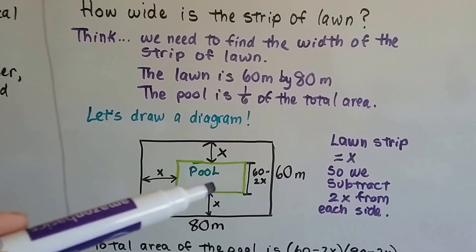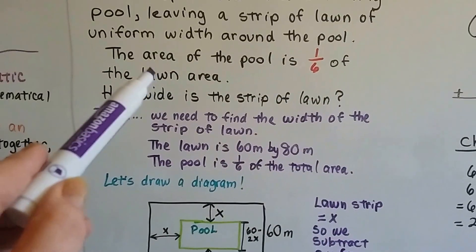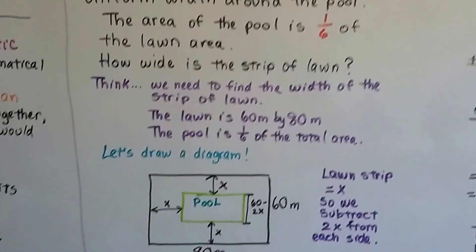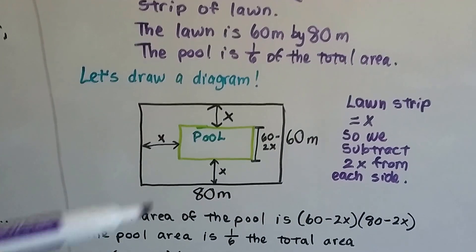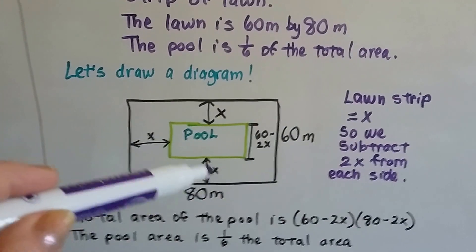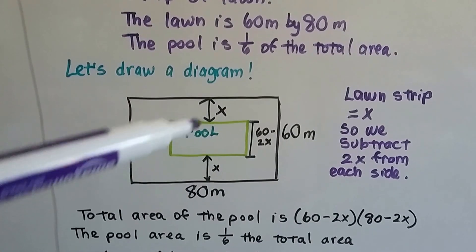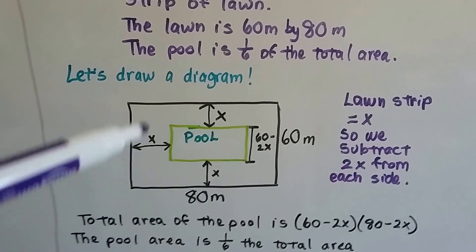The lawn is 60 meters by 80 meters. The pool is one-sixth of the total area. We need to find this width of lawn, so this is going to be x.